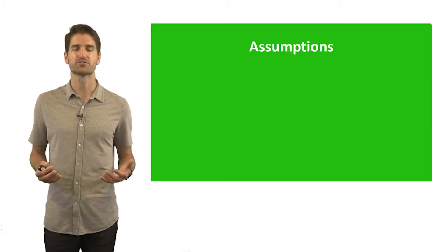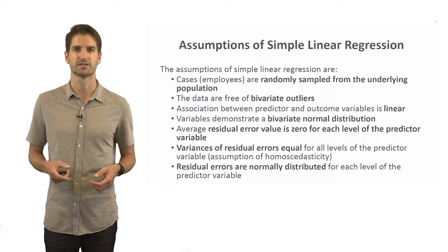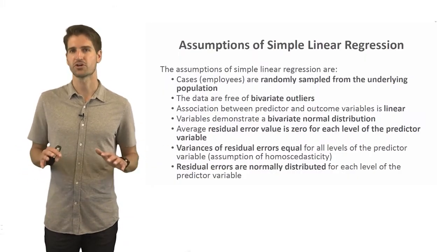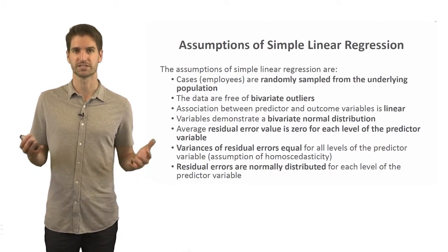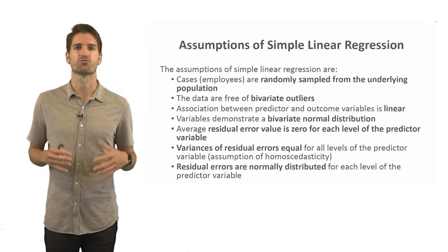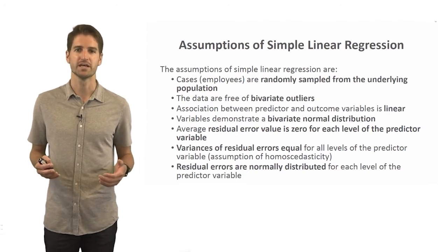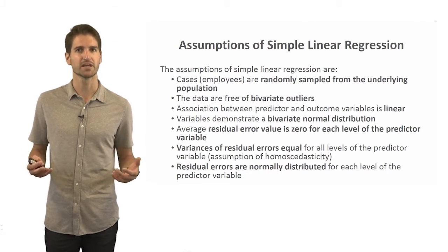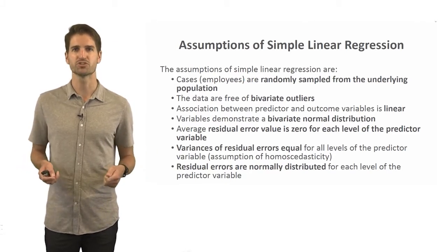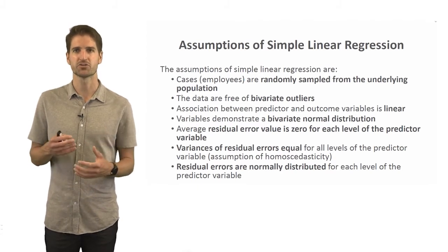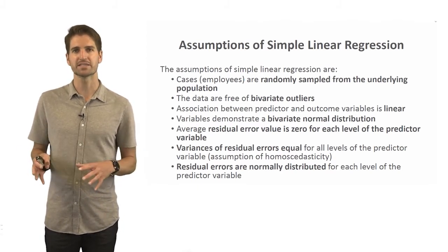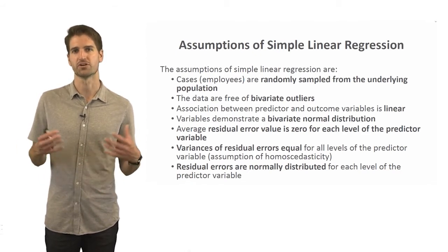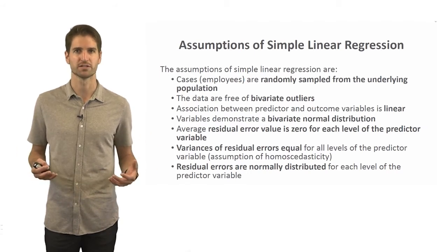Let's talk about the statistical assumptions underlying simple linear regression. First — and this is a hard one to demonstrate but important to consider — is that the cases are randomly sampled from the underlying population. Unless we use a random sampling or probability sampling technique, we want to make sure there's no clustering or nesting of the data. If we suspect that, there are other types of regression analyses we might use, such as hierarchical linear modeling, or multi-level regression.